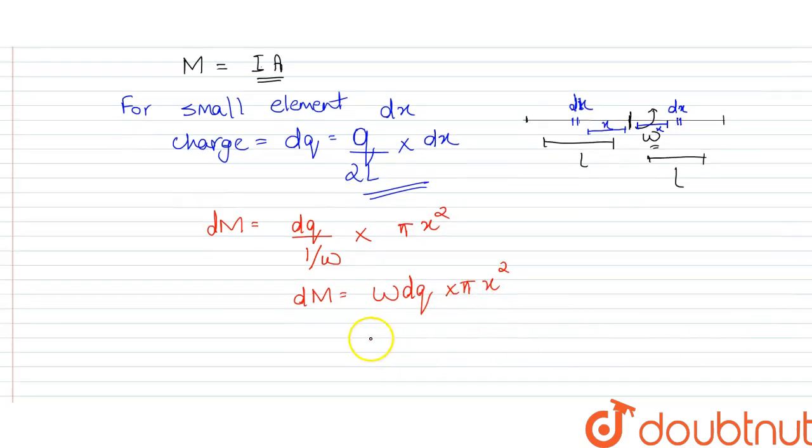We add the dq value. dM is equal to omega Q/2L times π x squared dx.